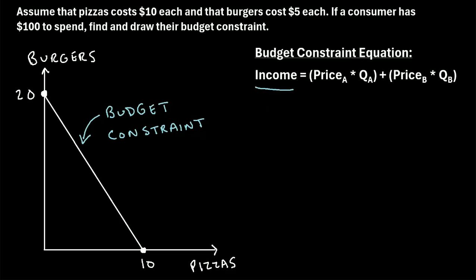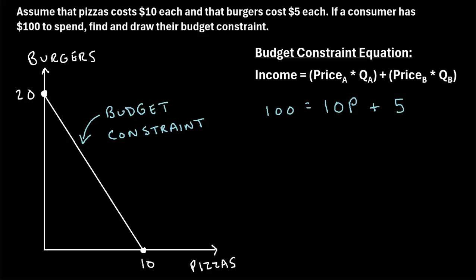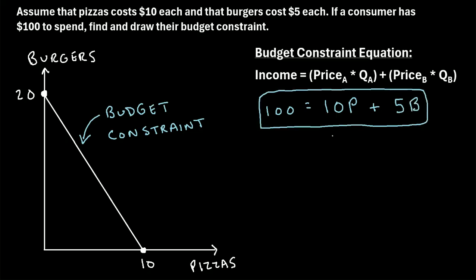To find the budget constraint equation for this example, let's fill in the known values. Income is $100, price of A (pizzas) is $10, so: 100 = 10P + 5B, where P is the quantity of pizzas and B is the quantity of burgers. This is our budget constraint equation for this particular example.